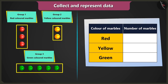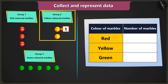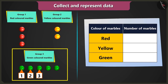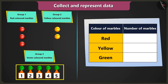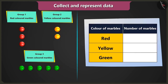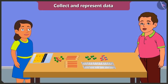Now we have to count the number of marbles in each group. There are three red marbles in the first group, two yellow marbles in the second group, and five green marbles in the third group. Now in the column count of marbles, we will write three beside red, two beside yellow, and five beside green. Well done, Bubbly — you represented the data very well.